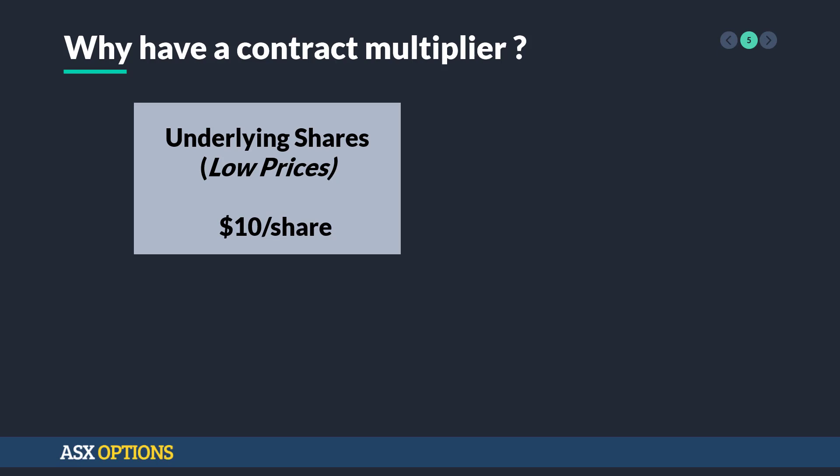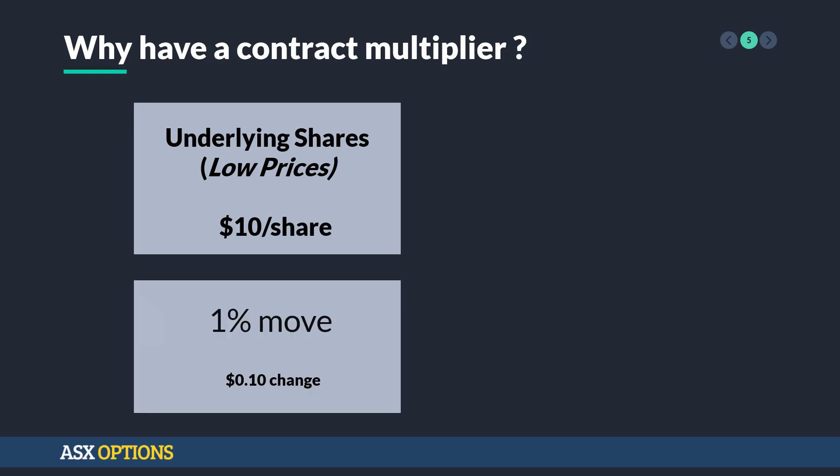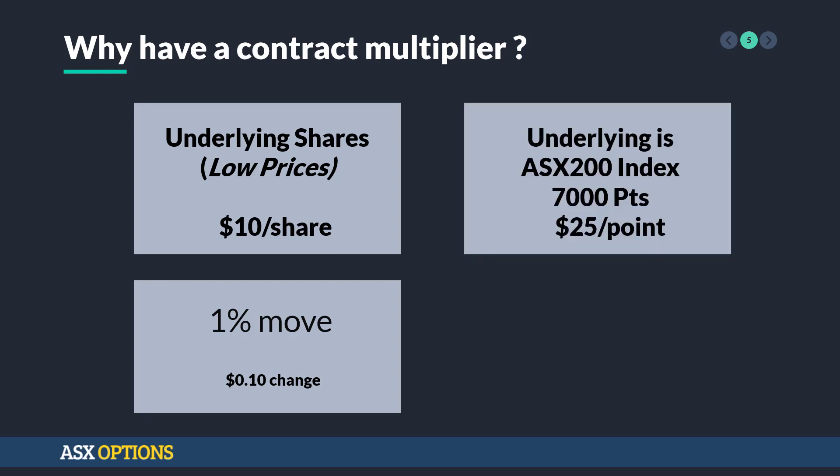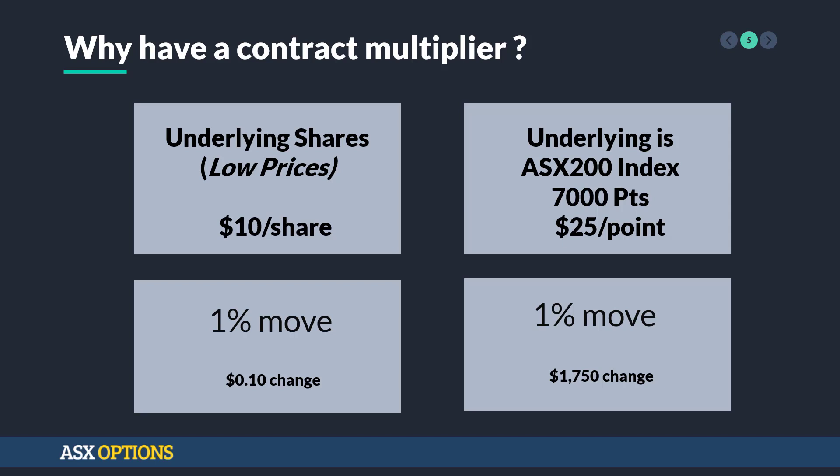Let's picture a scenario where we have an underlying share price of about $10. If we have a 1% move, that's equivalent to a 10-cent change — quite small. Whereas if we consider that the underlying is the ASX 200 index at around 7,000 points, each contract is about $25 per point. That's extremely large — imagine a 1% move now.